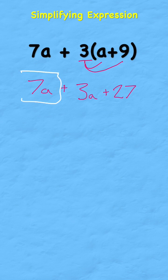I can see a 7a added to a 3a, that gives me 10a. Then I have the plus 27 on its own at the end, so I can put that back plus 27.